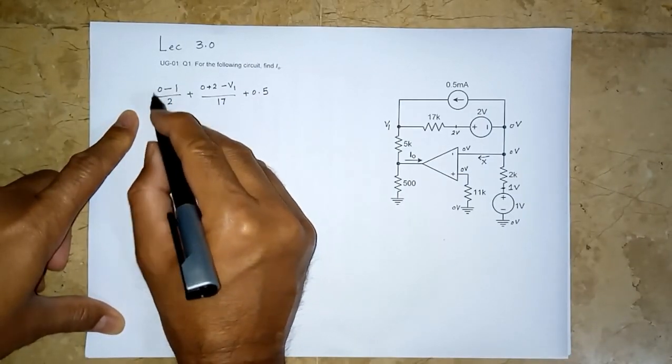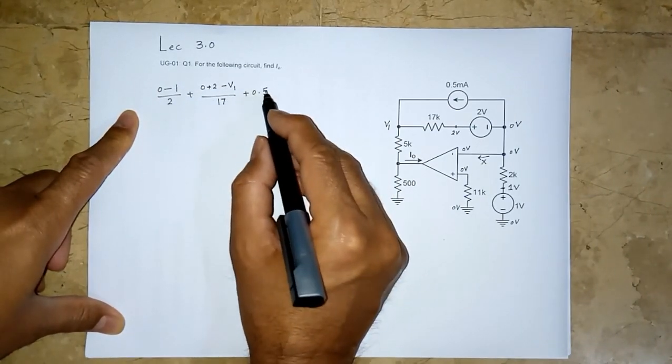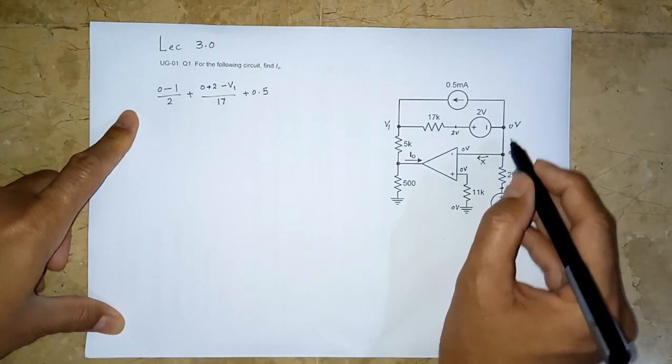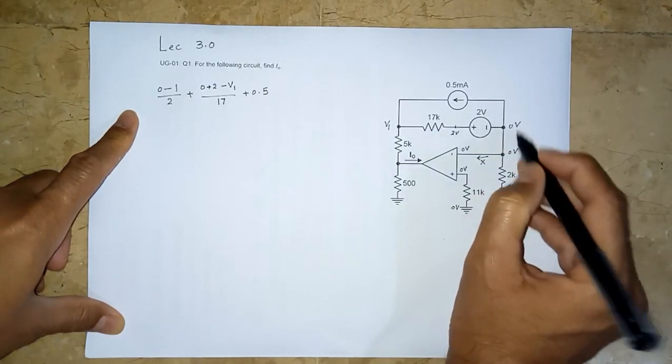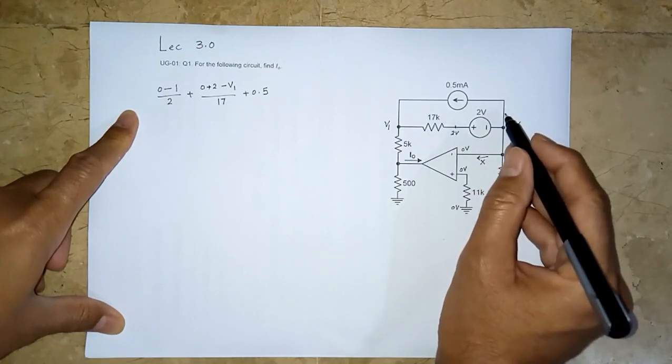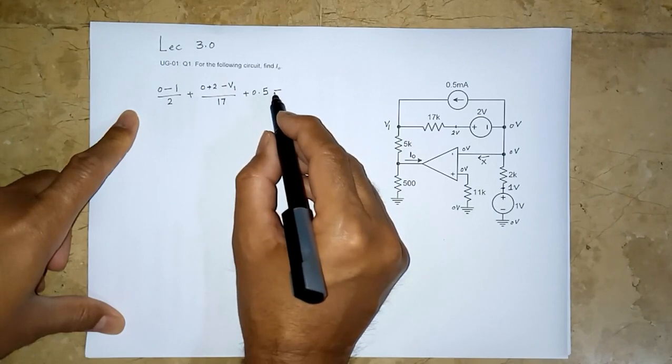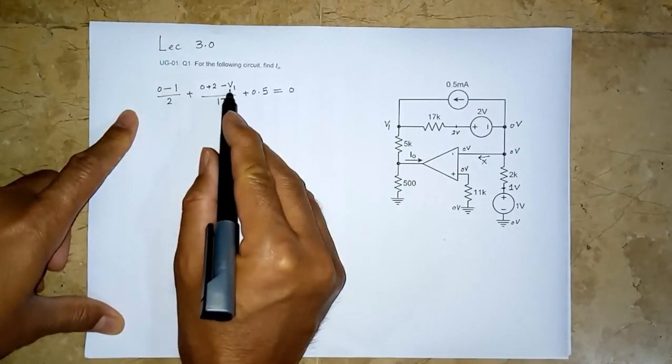And all we have at this node—basically all this is one node—we have one, two, three current-bearing branches. So we have three terms here. This is equal to 0. Now you can see there is only one unknown in here, and we can find what is v1.